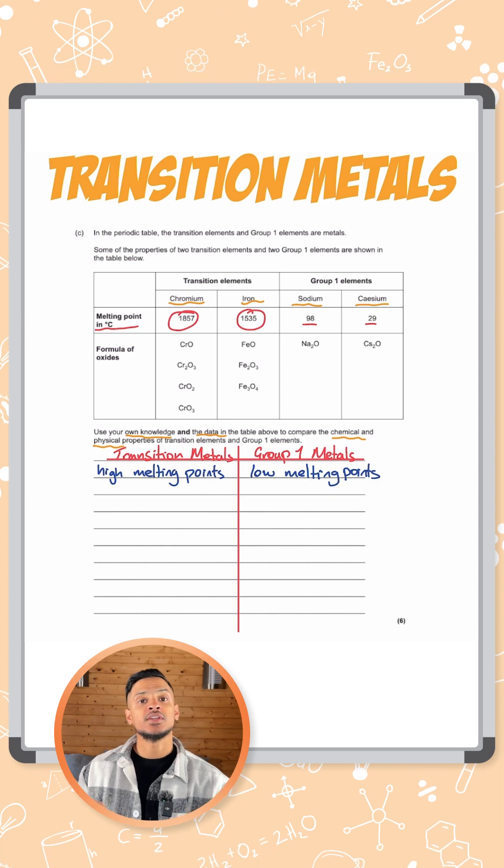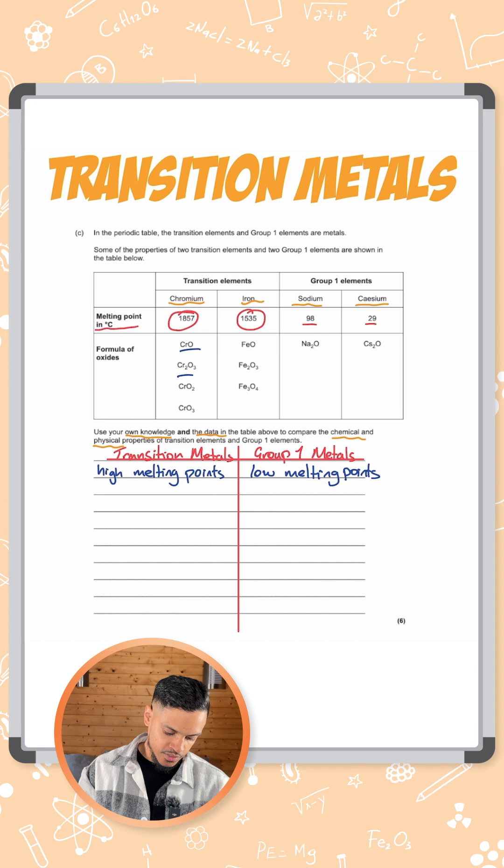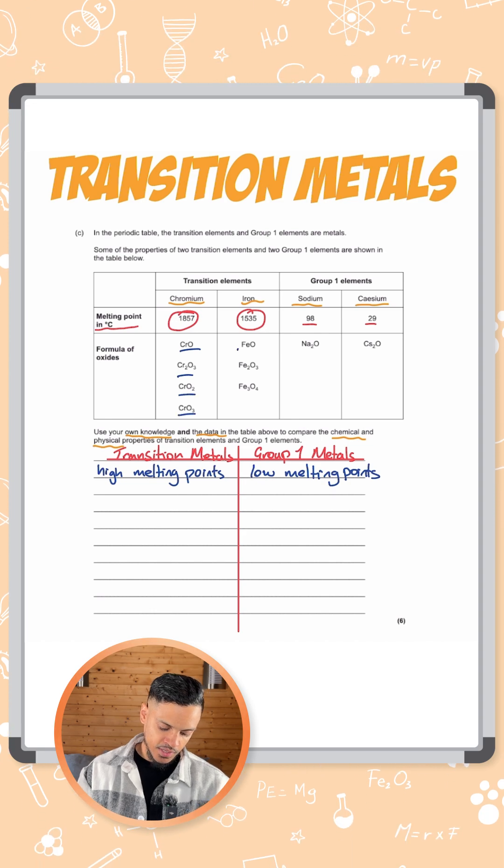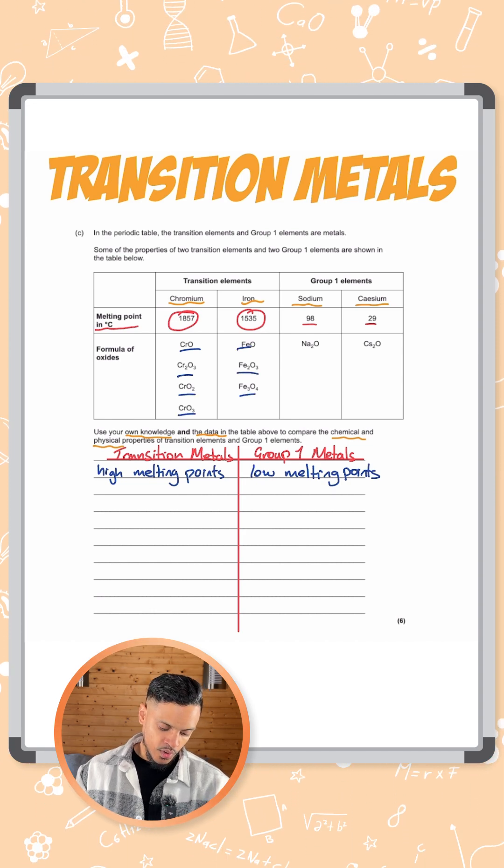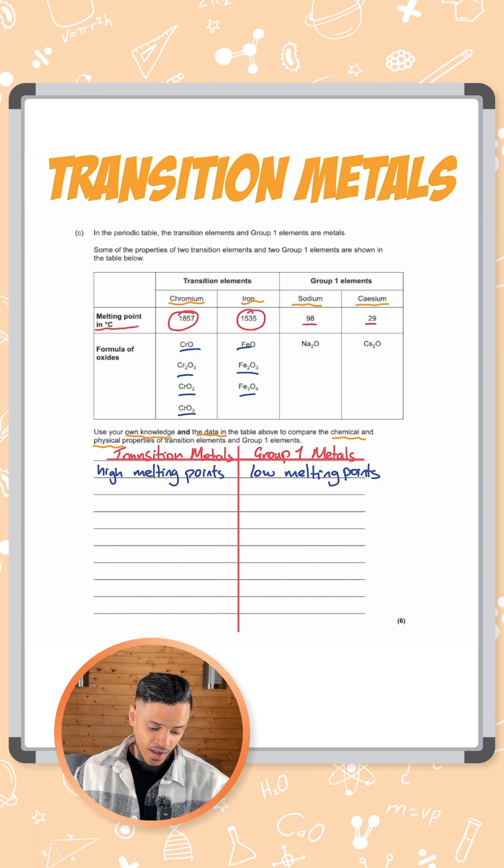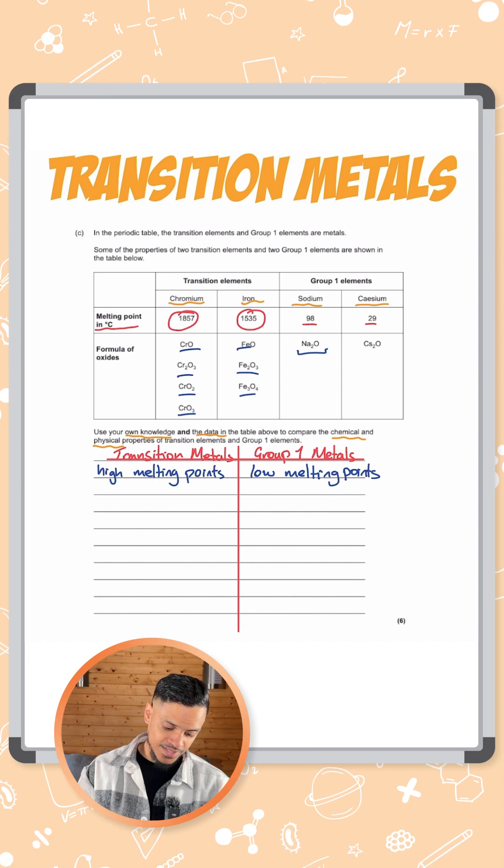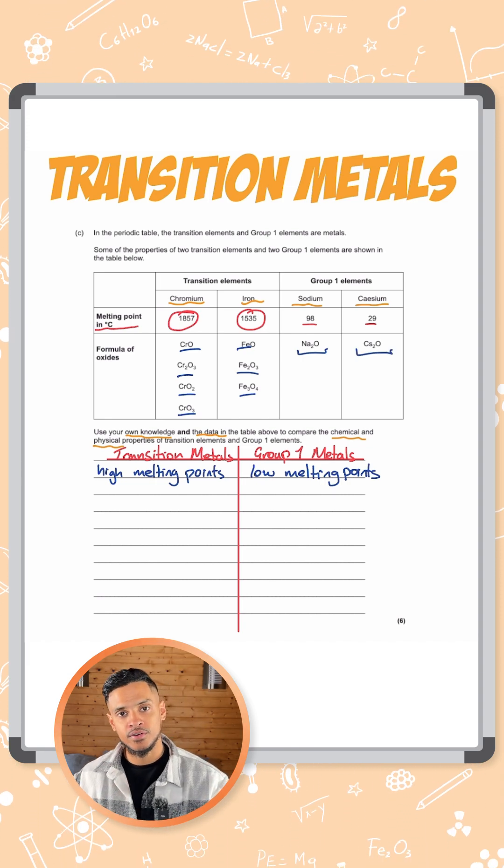The other piece of information in the transition metals is the formulas of oxide. So they've given this for a specific reason. What can you see as the difference between the two? Well for chromium there are four different types of oxide that can form. Iron can form three different oxides whereas group one elements so sodium and cesium can only form one different oxide.